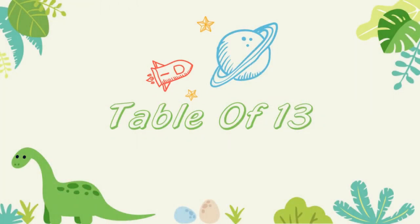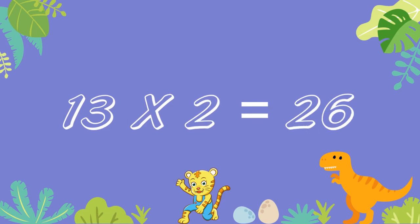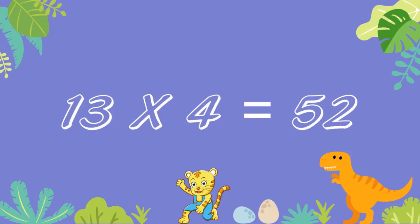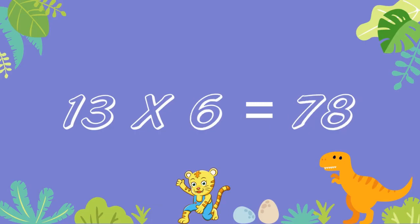Table of 13. 13 ones are 13. 13 twos are 26. 13 threes are 39. 13 fours are 52. 13 fives are 65.